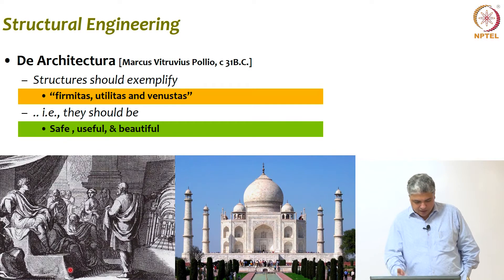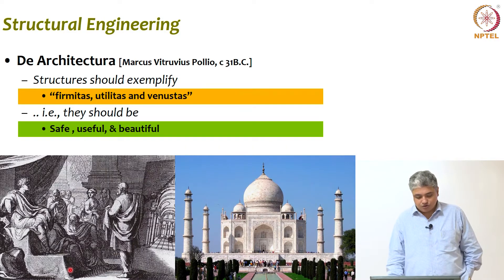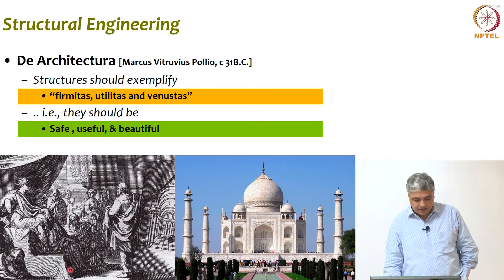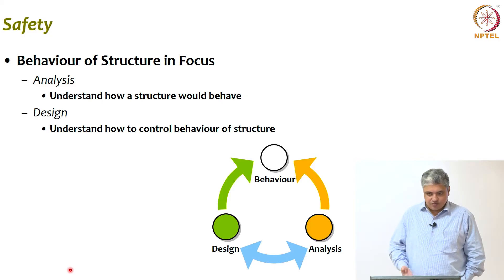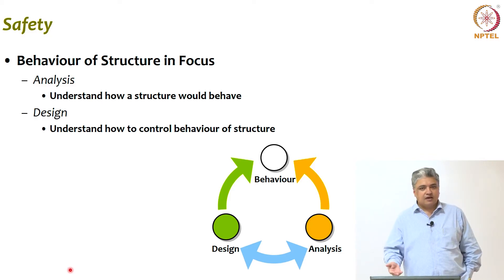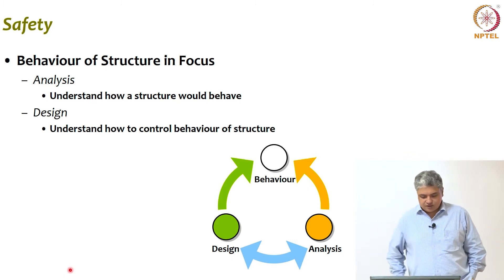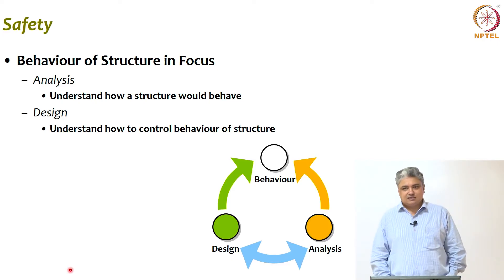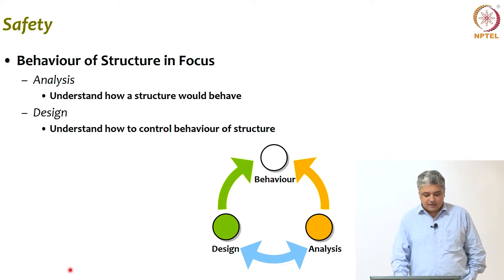Analysis and design. We have to build structures which are safe, useful, and beautiful. This is what was told to us thousands of years back, but the question is what is safety and how do you ensure safety? We have seen photographs where structures, buildings, and bridges have fallen down — that is not safety. How do you ensure safety? This is where two important tasks need to be carried out by an engineer, particularly a structural engineer: analysis and design.